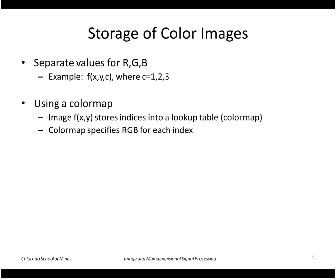We can store color images using explicit RGB values for each pixel, in which case we have a three-dimensional image of x, y, and the band or color index ranging from one, two, or three. You can also use a color map, which is a more concise representation at the expense of some accuracy.